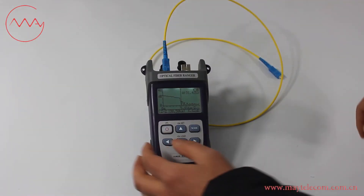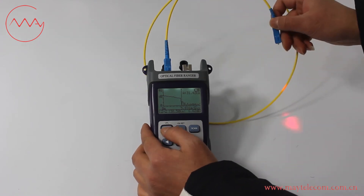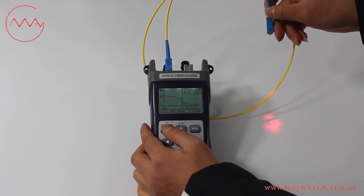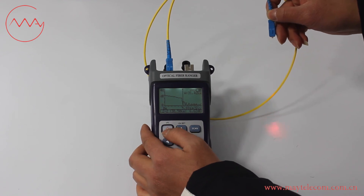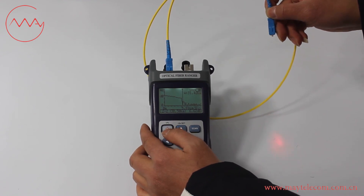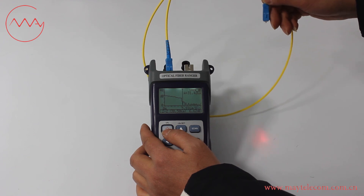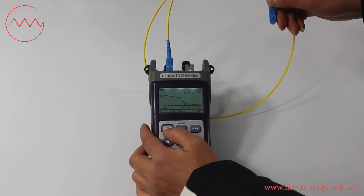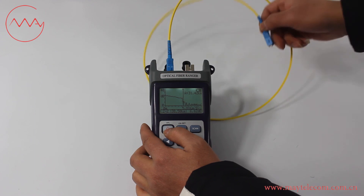Short press the power key to turn on the Wayfail — it is continuous wave mode. Short press the power key again to change the Wayfail mode — it becomes flashlight mode. Short press the power key to shut off the Wayfail.